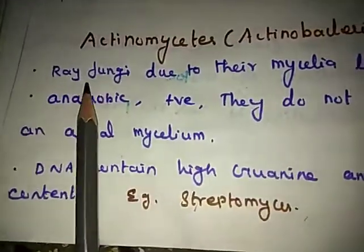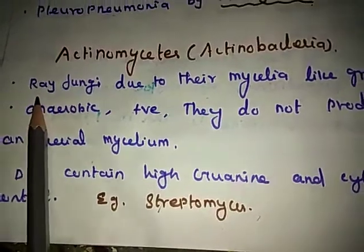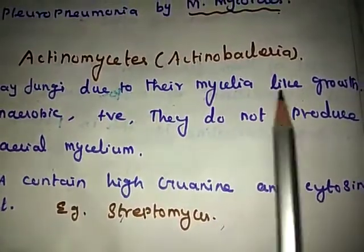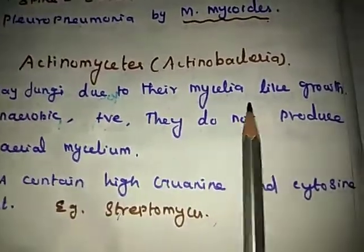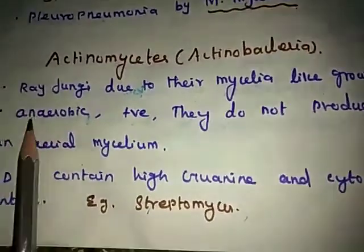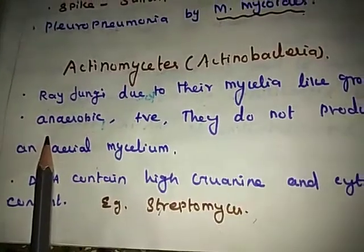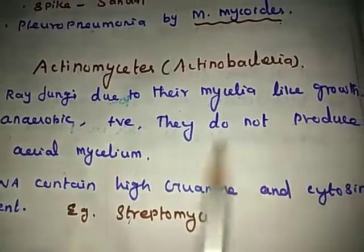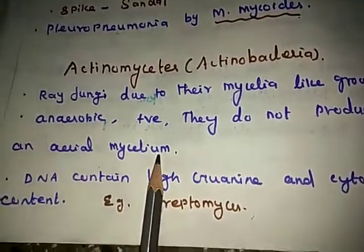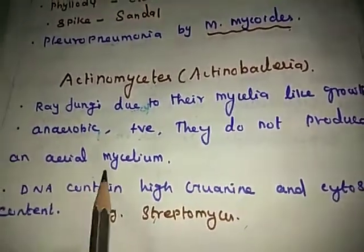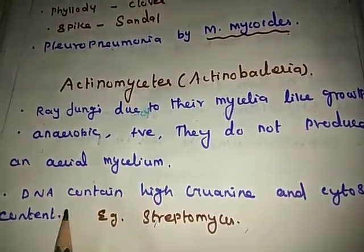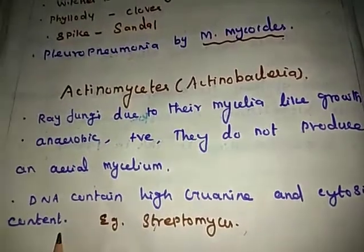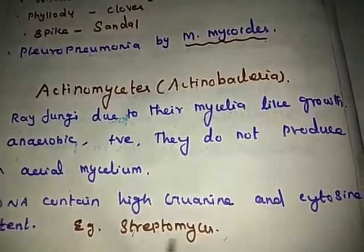Actinomycetes are also called Ray Fungi, due to their mycelia-like growth. They are anaerobic, gram-positive, and do not produce aerial mycelium. Their DNA contains high guanine and cytosine content. An example is Streptomyces.